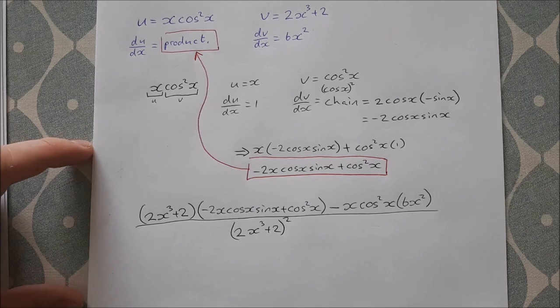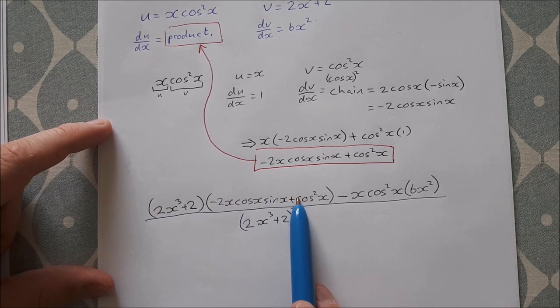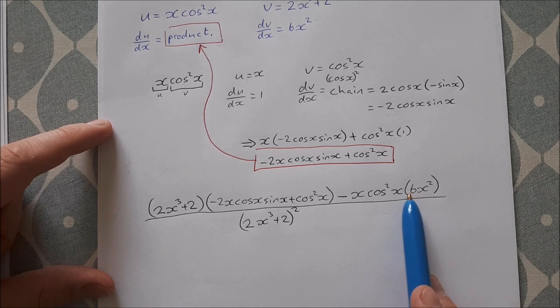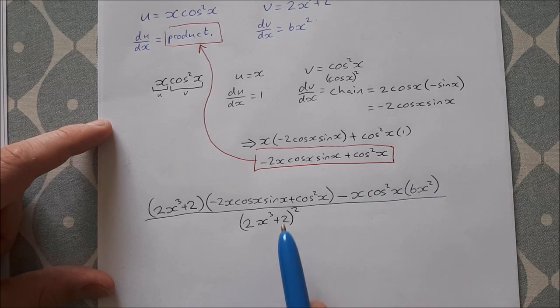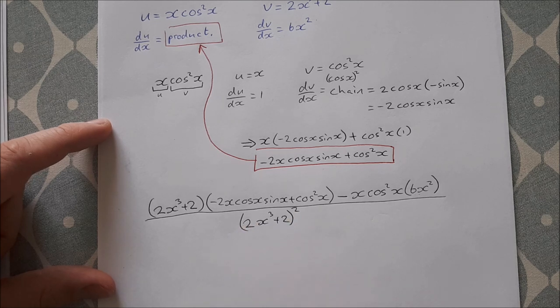Now there's not a whole lot of tidying up that I'm going to do. I'm not going to go multiplying out these brackets here because that's just going to make it even more complicated. I'll tidy up over here by multiplying the 6x² by this x and bringing it out in front. And on the bottom, I'm not going to square it out either—just leave it in brackets to be squared.